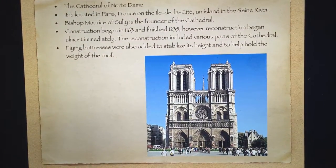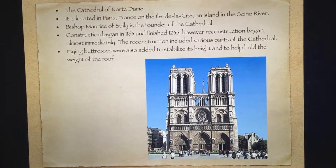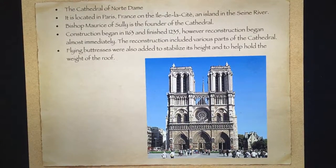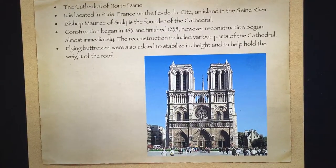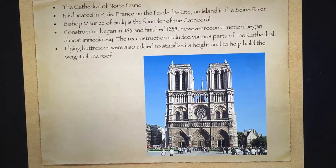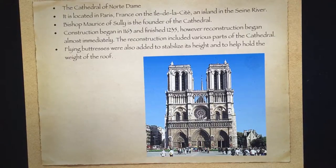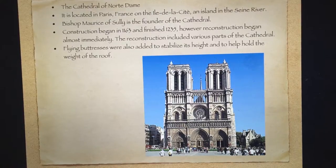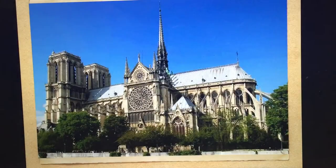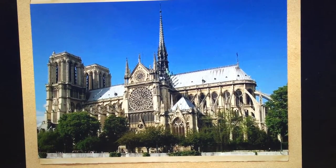The Cathedral of Notre Dame is located in Paris, France, on the Ile de la Cite, an island in the Seine River. Bishop Maurice of Sully is the founder of the cathedral. Construction began in 1163 and finished in 1235. However, reconstruction began almost immediately, including various parts of the cathedral. Flying buttresses were also added to stabilize its height and to help hold the weight of the roof.